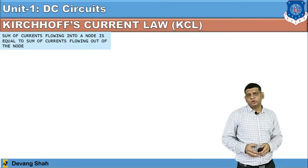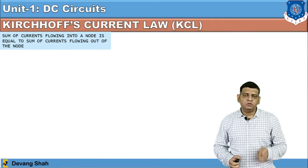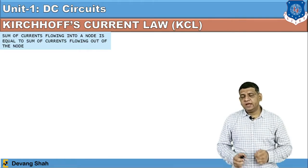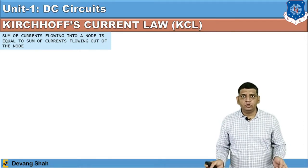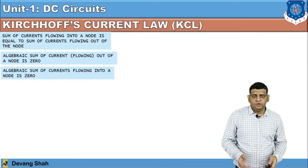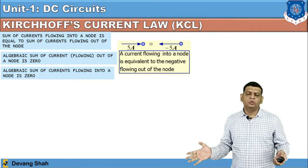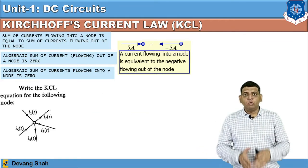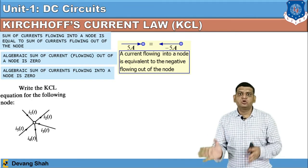Now the most important law: Kirchhoff's current law, which is always applicable to a node. The node is very important terminology because it is a part of the circuit. Kirchhoff's current law must be applicable to a node — if there is no node, there is no Kirchhoff's current law. What does this law say? At a given node, some currents are entering and some currents are leaving. The sum of entering currents is equal to the sum of outgoing currents. The algebraic sum of current must be equal to zero at a particular node. This is the statement of Kirchhoff's current law.